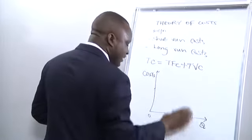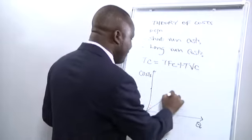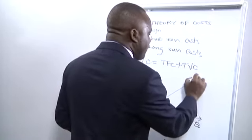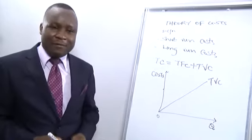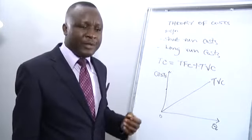That means that when production level is at zero, there are no variable costs incurred. And for that reason, our total variable cost curve on the assumption of linearity is a straight line that begins from the origin. That is how our total variable cost curve looks like.